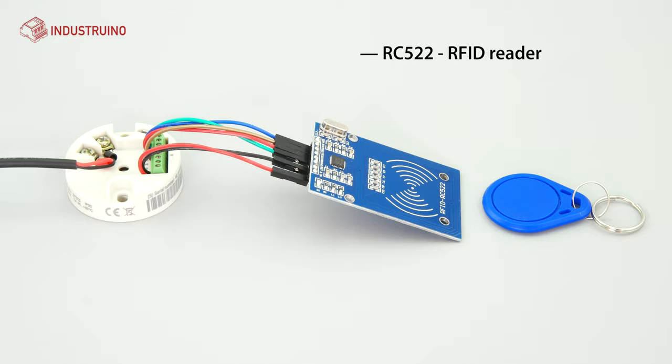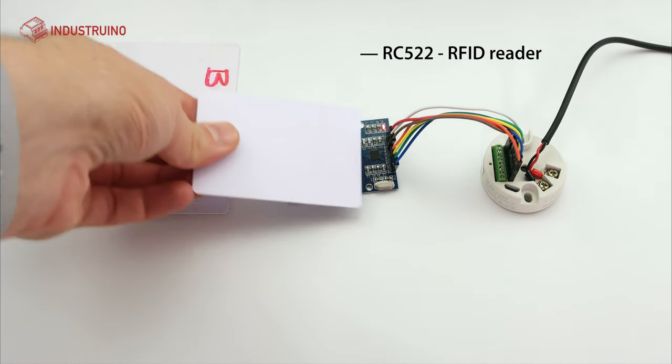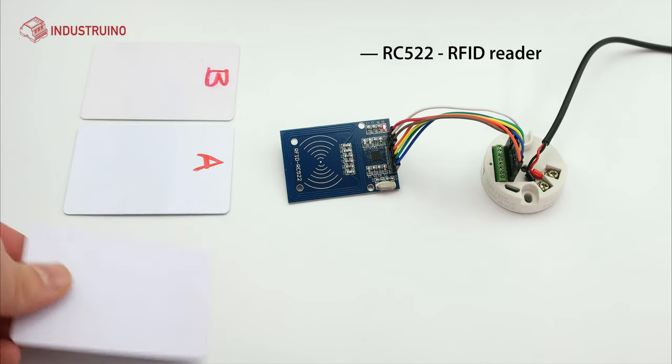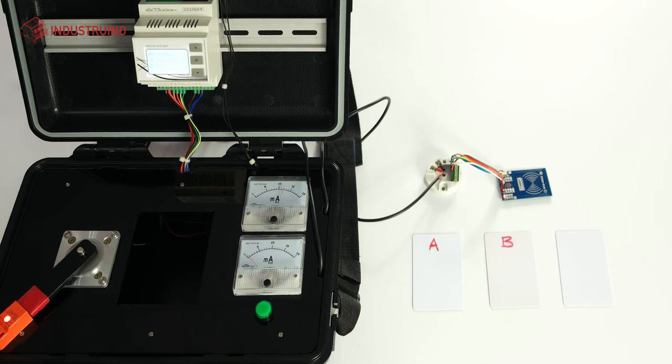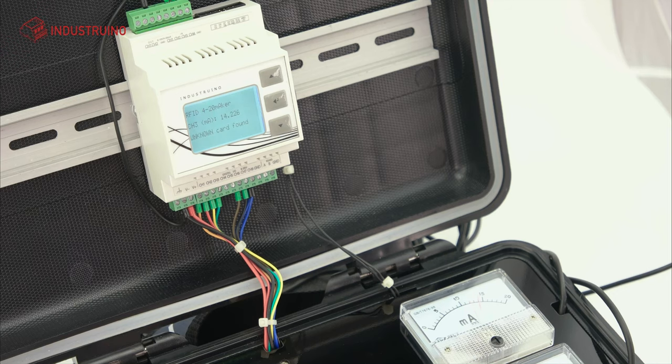Our final example is an RC522 RFID reader connected to the 420mA maker by the SPI bus. Each unique card ID, which is read from the presented cards, is compared to a list of known cards. A match will set the DAC control loop current to a specific level.